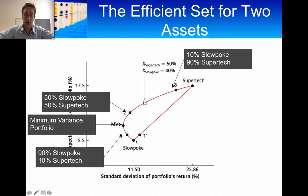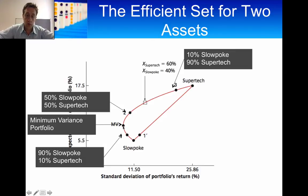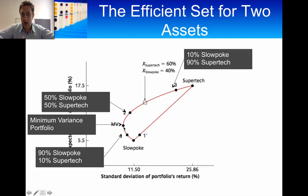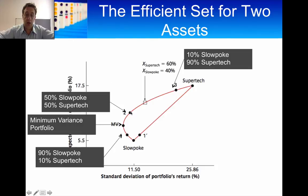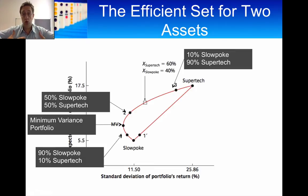You can get a combination of portfolios — and this is theoretical mathematics — where you can minimise your risk. We call that portfolio the minimum variance portfolio. You might ask whether this portfolio is better than another one. This portfolio has lower risk but also lower expected return, while another has a higher expected return but a higher risk. So at this point in the course, it is difficult to know which one is better.